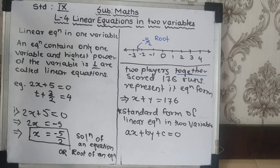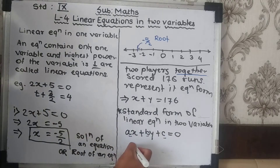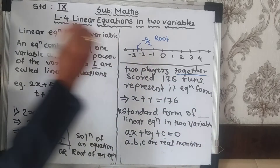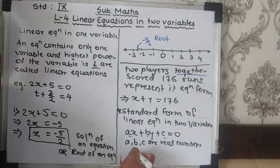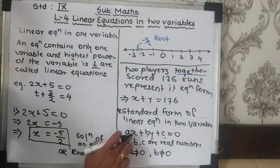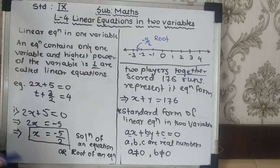Here a, b, and c are real numbers, and importantly, a should not equal 0 as well as b should not equal 0. If a = 0 or b = 0, it will no longer be a linear equation in 2 variables — it becomes a linear equation in 1 variable, or simply a constant term will remain.